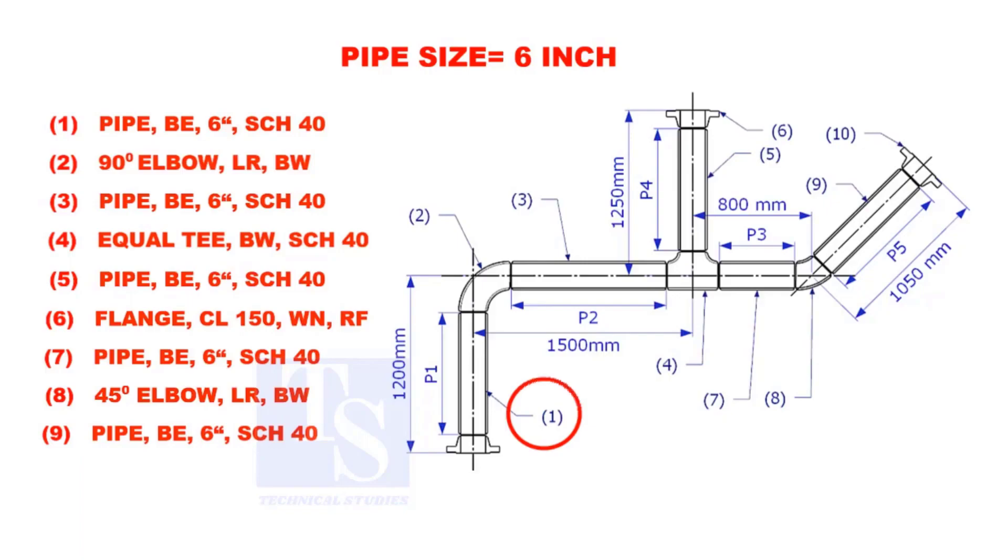Let us calculate the length of pipe 1. To calculate the length of pipe 1, we need to reduce the flange height and the elbow center from the measurement 1200mm.